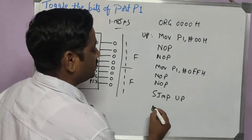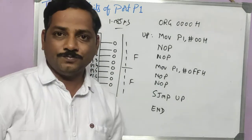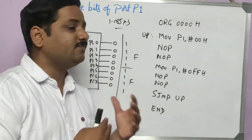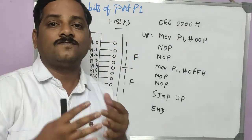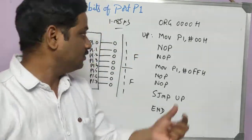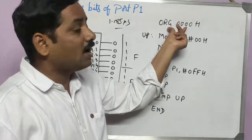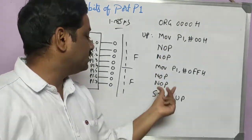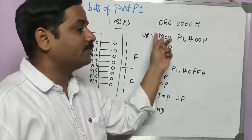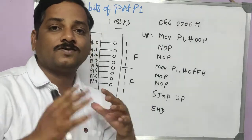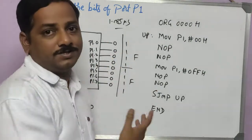The last line you can write is END — that is the end of the program. Now, if you want to try a new condition — for example, toggle it only 5 times — you can assign a count: MOV R0, #05H. Then instead of SJMP, use DJNZ R0, label 'up'. Then it will toggle for exactly 5 times. But since the question has no such condition, I am taking it as a continuous loop.